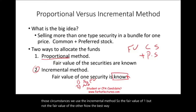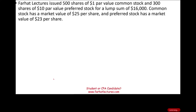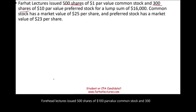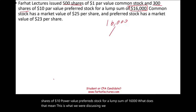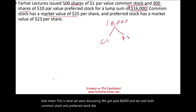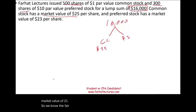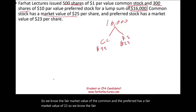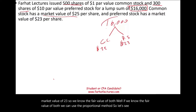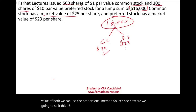The best way to illustrate this concept is to take a look at an example. Farhat Lectures issued 500 shares of $1 par value common stock and 300 shares of $10 par value preferred stock for a lump sum of $16,000. We got paid $16,000 and we sold both common stock and preferred stock. The common stock has a fair market value of $25 and the preferred has a fair market value of $23. Since we know the fair value of both, we can use the proportional method.